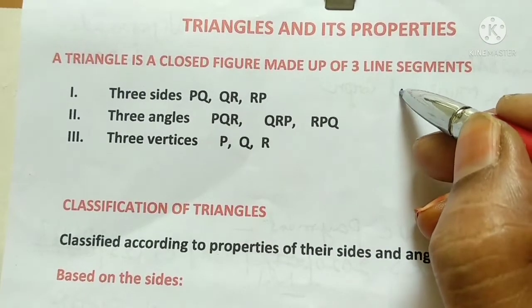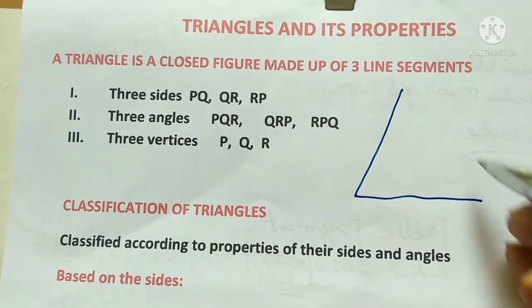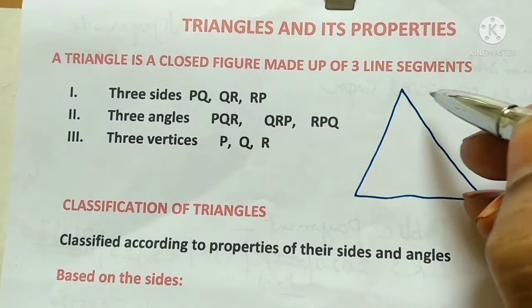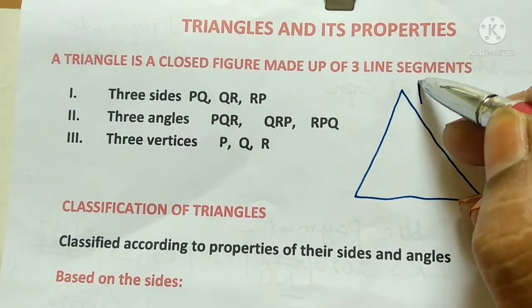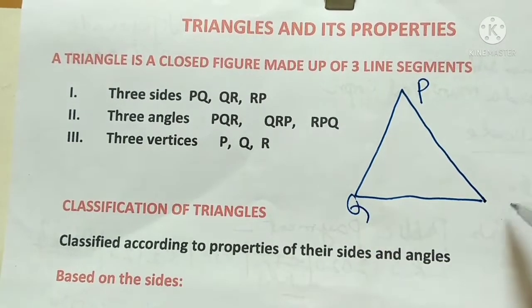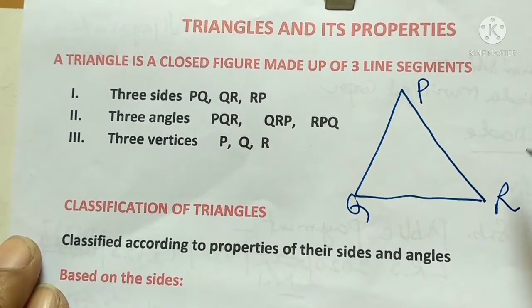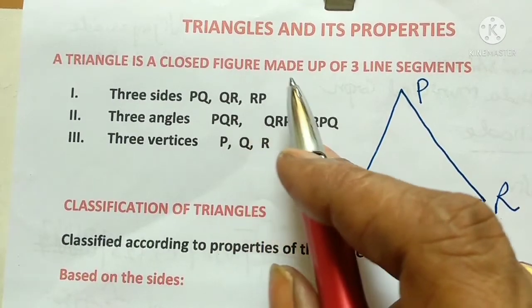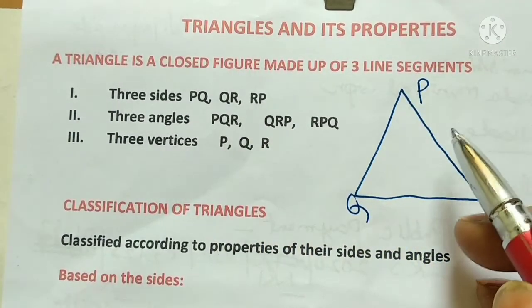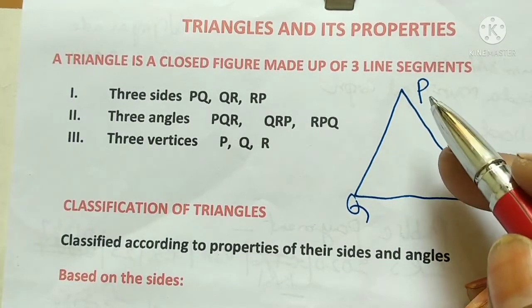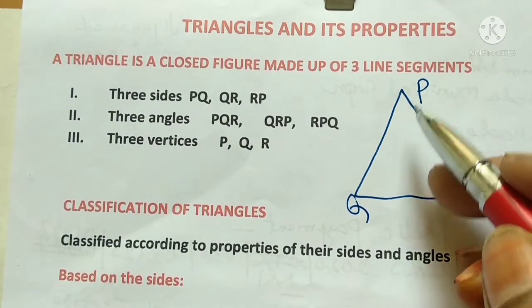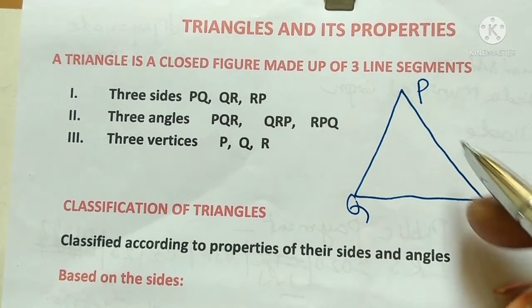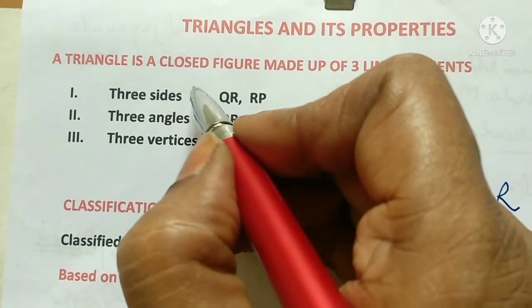What is a triangle? Let us say this is PQR. A triangle is a closed figure made up of three line segments. Three line segments means three sides: PQ, QR, RP — three sides.